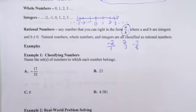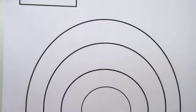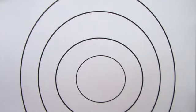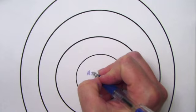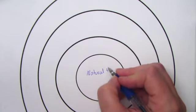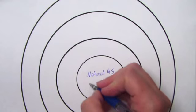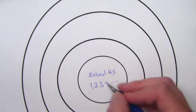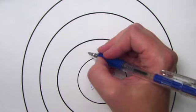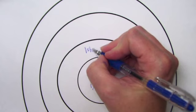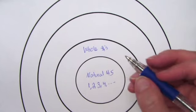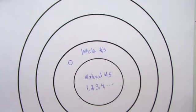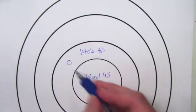Now, I've given you a real number Venn diagram to fill out with these notes. This middle circle is natural numbers — these are the ones that start off with 1, 2, 3, 4, and so on. The next one up is whole numbers, which include all the natural numbers but also have 0 in addition to them.